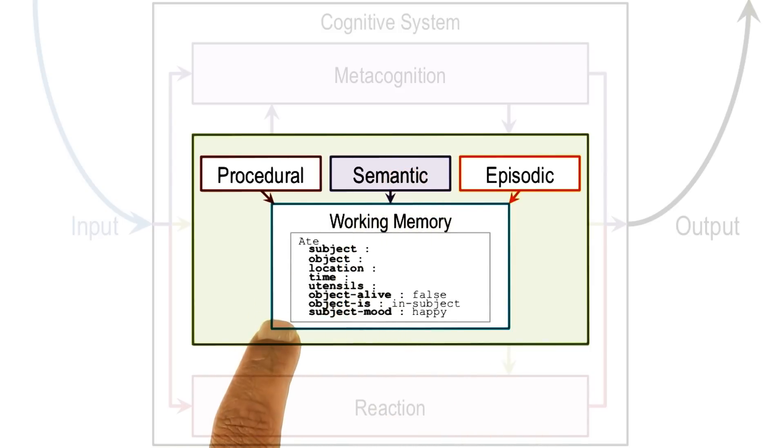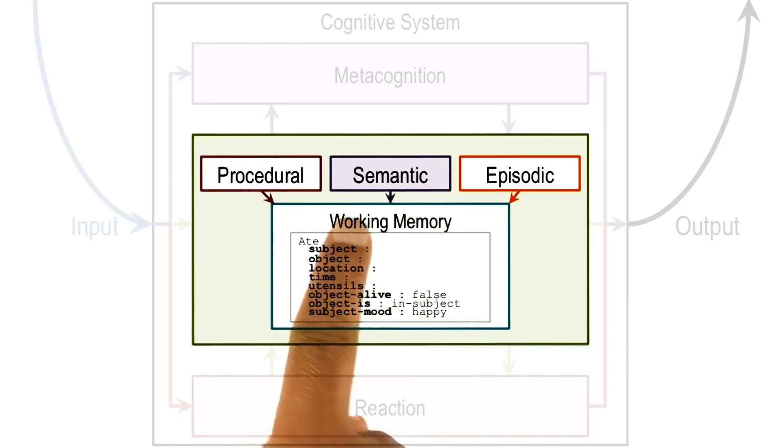Once this frame is pulled out of semantic memory, it immediately generates expectations. So we now know that ate is likely to have a subject and object and location, perhaps time, utensils, and so on.